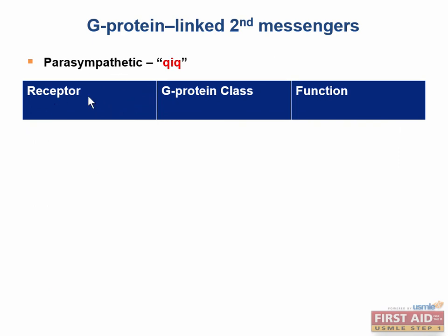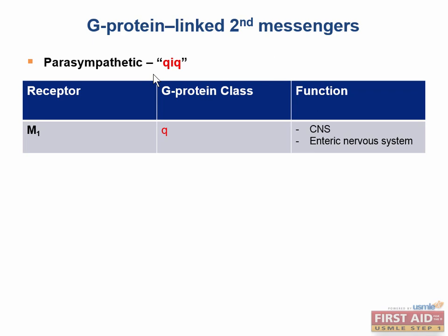Now we can move on to our parasympathetic and organ receptors. The M1 receptor is of the G-sub-Q class, and it is found primarily in the central nervous system and the enteric nervous system. It's not going to be that important for Step 1. Remember, the M2 and M3 receptors are going to be the most important.